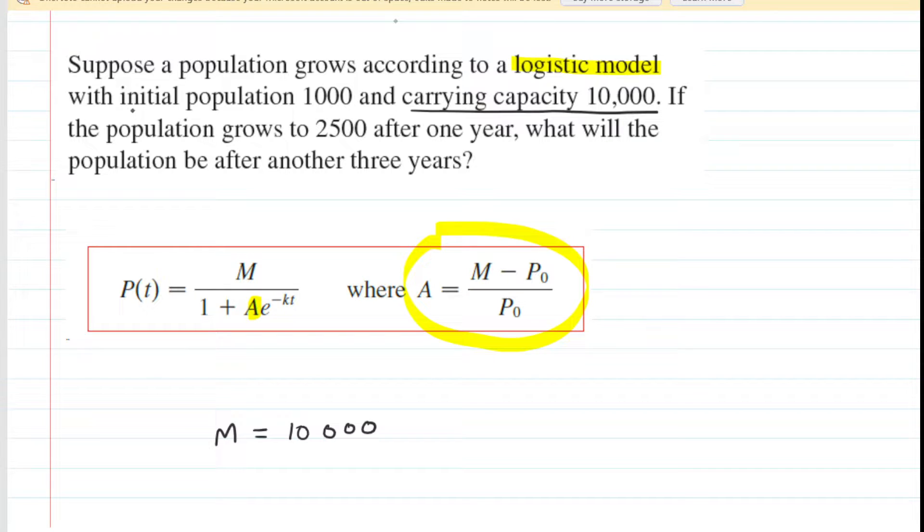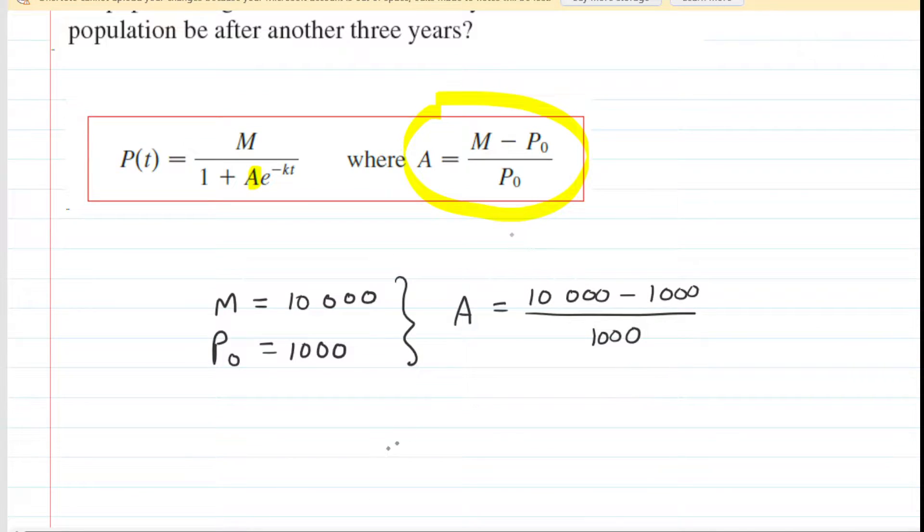In addition, we have an initial population of 1,000, so that means that P sub 0 is equal to 1,000. And with those values, we can plug in to the equation for A and solve for A. So in the numerator, we end up with 9,000 divided by 1,000, and of course then the value of A is equal to 9.